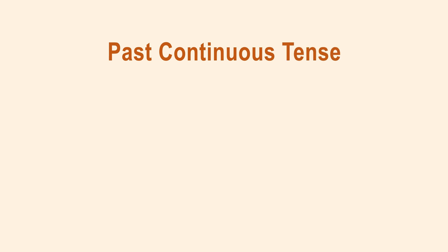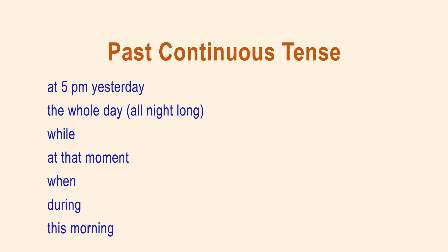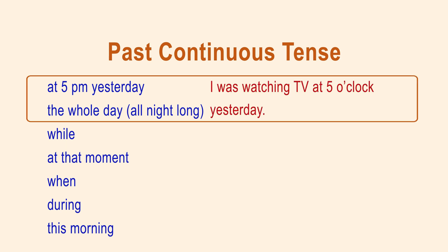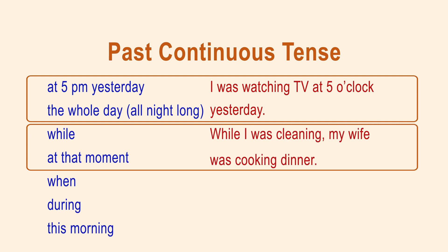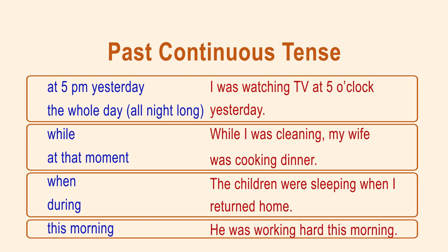The next is the past continuous tense, which can be identified with the following time markers: at 5pm yesterday, the whole day, while, at that moment, when, during, this morning. Here are the examples: I was watching TV at 5pm yesterday. While I was cleaning, my wife was cooking dinner. The children were sleeping when I returned home. He was working hard this morning.